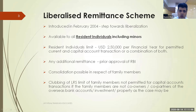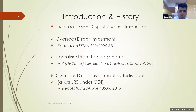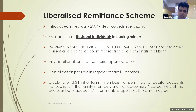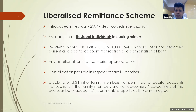Even overseas direct investment (ODI) by an individual falls within the $250,000 category. The money to be remitted outside India must be within the $250,000 limit. There is a recent amendment in income tax regarding TCS, but since this course is about FEMA, we will focus only on FEMA. The $250,000 remittance limit is per person per financial year.